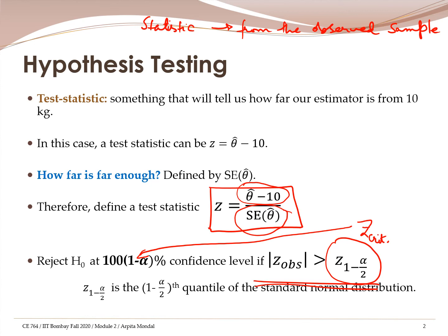There are two important things to remember here. First, we always either reject the null hypothesis or do not reject it. All we are trying to see is whether our observed sample has enough evidence to reject the null hypothesis or not. You cannot conclude that the alternate hypothesis can be accepted, the alternate hypothesis can be rejected, or the null hypothesis can be accepted — none of these are possible. All we can examine is whether there is evidence to reject the null hypothesis or not.